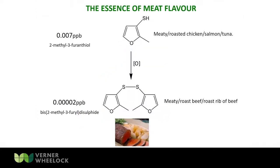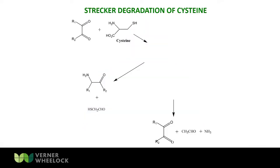So where do these compounds come from when you're roasting a piece of beef in your oven? Starting with the sulfur: the sulfur comes from the amino acid cysteine, via the Strecker degradation reaction, where cysteine reacts with a sugar fragment and forms an intermediate called an imine, which then breaks down to form a mercaptoacetaldehyde and an amino ketone. The amino ketone can dimerize to form pyrazines — roast-type compounds.